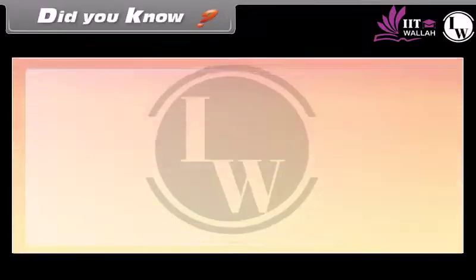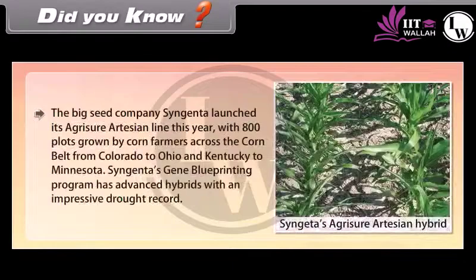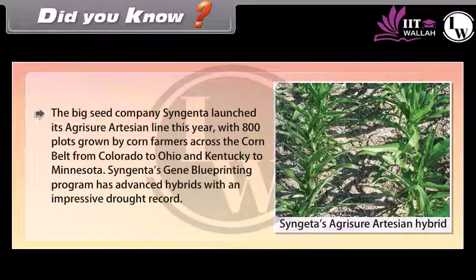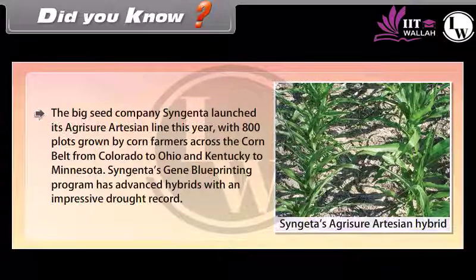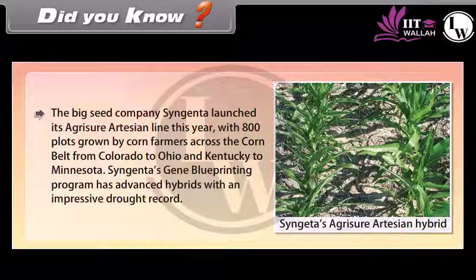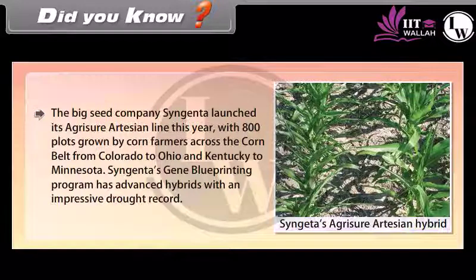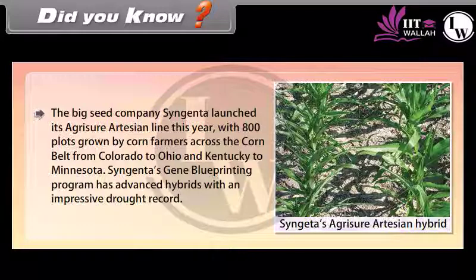Did you know? The big seed company Syngenta launched its Agrisure Artesian line with 800 plots grown by corn farmers across the corn belt from Colorado to Ohio and Kentucky to Minnesota. Syngenta's gene blueprinting program has advanced hybrids with an impressive drought resistance record.